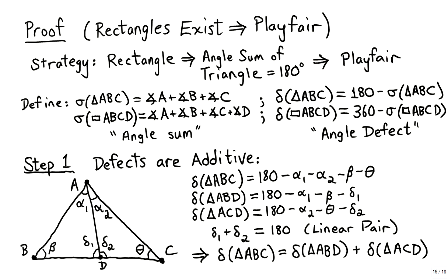Before we begin, we'll define a few things. First, sigma will denote the angle sum of a geometric figure. For instance, the angle sum of triangle ABC equals the sum of angles A, B, and C. Similarly, the angle sum of quadrilateral ABCD equals the sum of angles at A, B, C, and D. We'll also define a function, lowercase delta, for the angle deficit. Delta of triangle ABC equals 180 degrees minus the angle sum. Similarly, the angle deficit of quadrilateral ABCD equals 360 degrees minus the angle sum of that quadrilateral.